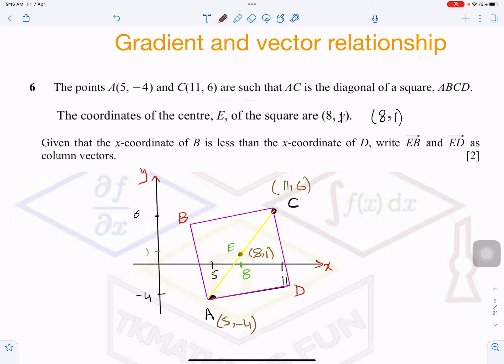So the question is: the points A and C are the diagonal of a square ABCD. I have drawn here roughly the coordinates of the center of the diagonal AC are E at (8, 1). By the way, the word written in the coordinates of the center, because there are other parts of the question which I have not mentioned here. So E was the center of the diagonal AC. That's why I have calculated it here (8, 1).